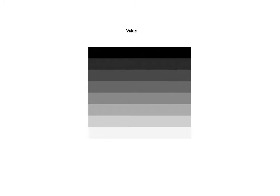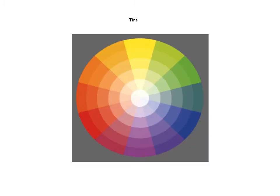As part of our color wheel, we're going to look at value too. One way to change the value is through tint. Any of those hues in the color wheel plus white is called a tint. So on your color wheel, you're going to do each hue plus tint in one of the circles around the inside or outside.